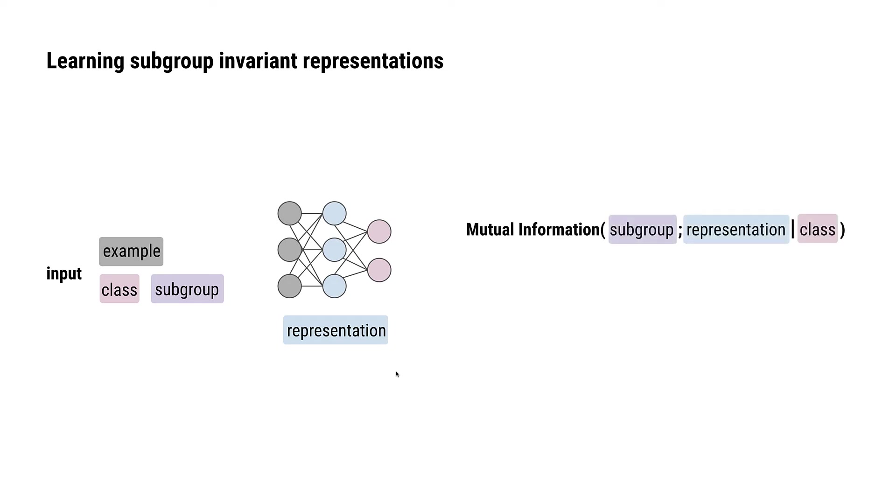The mutual information between the subgroup and representation given the class tells us whether the representation contains any subgroup information. If we successfully minimize this mutual information quantity, the representation will carry no subgroup information and will be invariant to the subgroup.